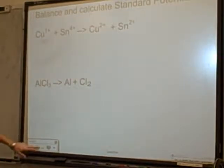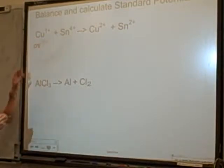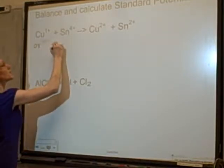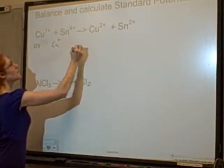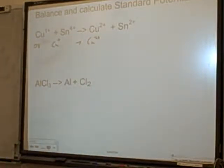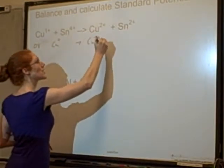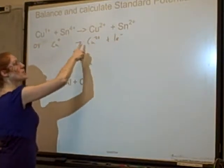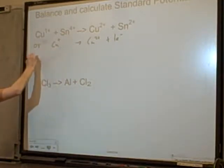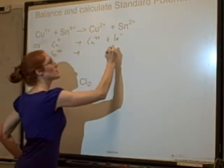Let's try one. I want an oxidation. I can see that copper is becoming more positive, so copper is being oxidized. Cu+ goes to Cu2+. I've got one copper atom on either side, so I just need to add electrons to balance the charge. This side is a one plus, this side is a two plus, so I'm going to add one electron - now I've got a one plus on each side. The thing being reduced is Sn4+, being reduced to Sn2+.